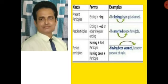For past participle: the married couple have jobs — 'married' is past participle here. He ate a rotten mango — 'rotten' is past participle here. He threw away the broken chair — 'broken' is past participle here.